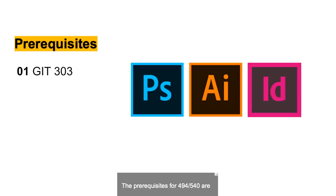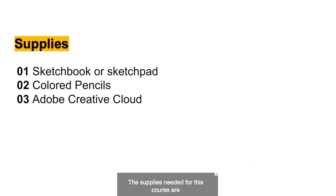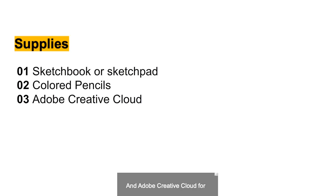The prerequisites for 494 540 are GIT 330, because we'll use InDesign, Illustrator, and Photoshop. The textbook for this class is Graphic Design School by Dabner, Stewart, and Vikris. The supplies needed are a sketchbook or sketchpad, colored pencils, and Adobe Creative Cloud for Illustrator, Photoshop, InDesign, XD, and Dimension.